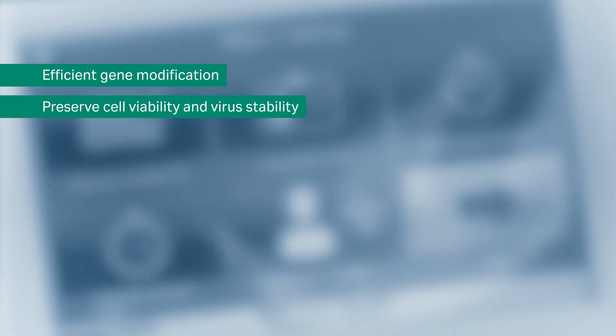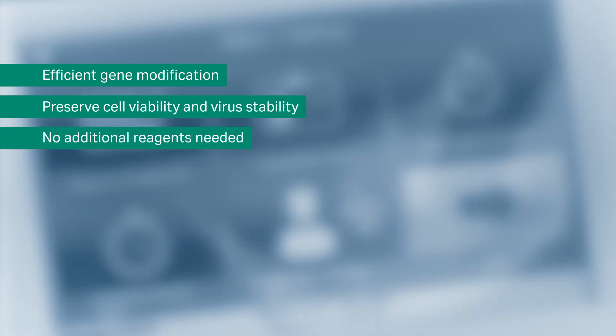With spinoculation, you get an efficient gene modification step that preserves cell viability and virus stability without the need for any additional reagents. This process is also quicker and easier than comparable manual options, with the added benefit of complete traceability.